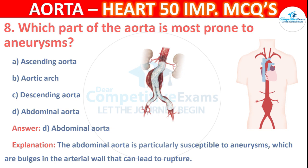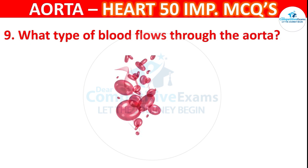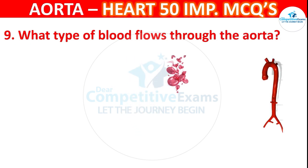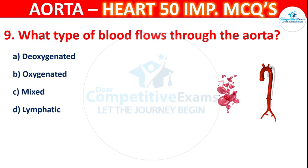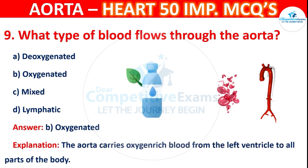Question number 9: What type of blood flows through the aorta? Options are deoxygenated, oxygenated, mixed, or lymphatic. The correct answer is B — oxygenated. The aorta carries oxygen-rich blood from the left ventricle to all parts of the body.